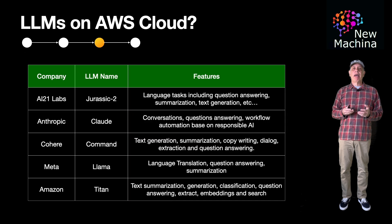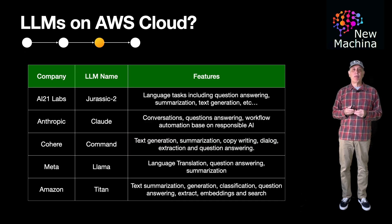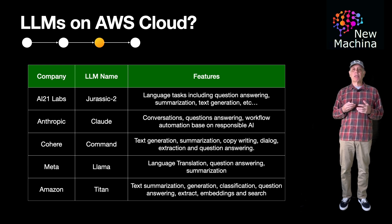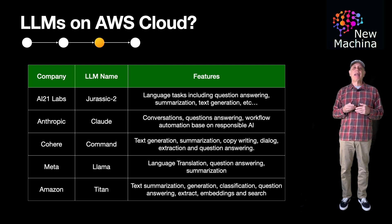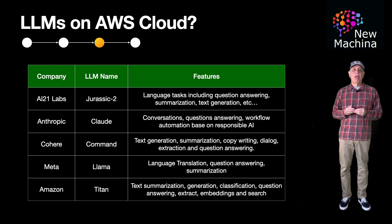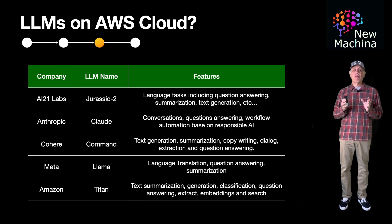Builders can use Amazon Bedrock to access LLMs in AWS Cloud. Today, builders have a choice between Anthropic's Claude, Cohere's Command, Meta's Llama, AI21 Labs' Jurassic, and Amazon's own Titan LLM. Amazon Bedrock allows builders to easily plug and play between different LLMs and their AWS Cloud-based systems.